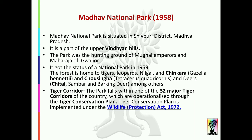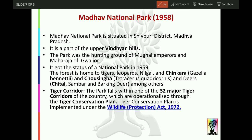Madhav National Park detail: it was established in 1958 and is situated in Shivpuri district. It is part of the Aravindya (Vindhya) ranges. The park was the hunting ground of Mughal emperors and the Maharaja of Gwalior. It got the status of National Park in 1959. Animals found here include Tiger, Leopard, Nilgai, Chinkara, Chowsingha, and Cheetal.